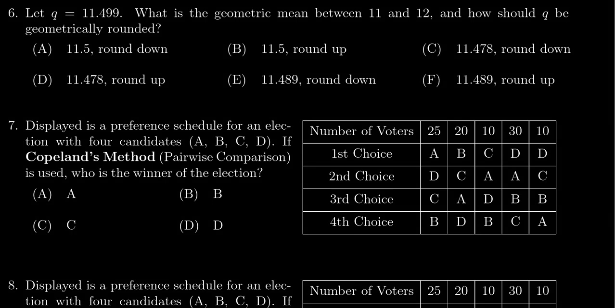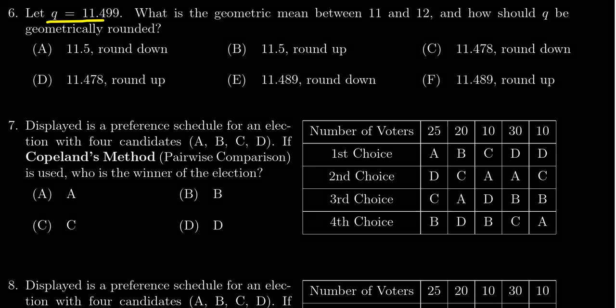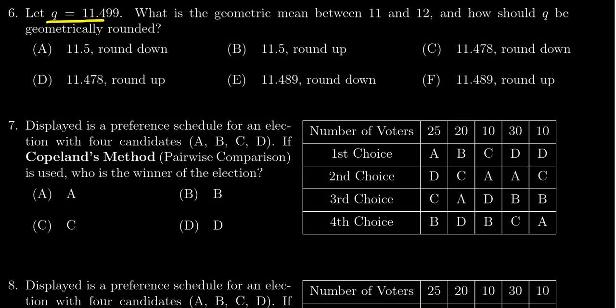In this video we provide the solution to question number six for practice exam three for math 1030, in which case we were given a quota as if from an apportionment method, q equals 11.499, and we're asked which is the geometric mean between 11 and 12.